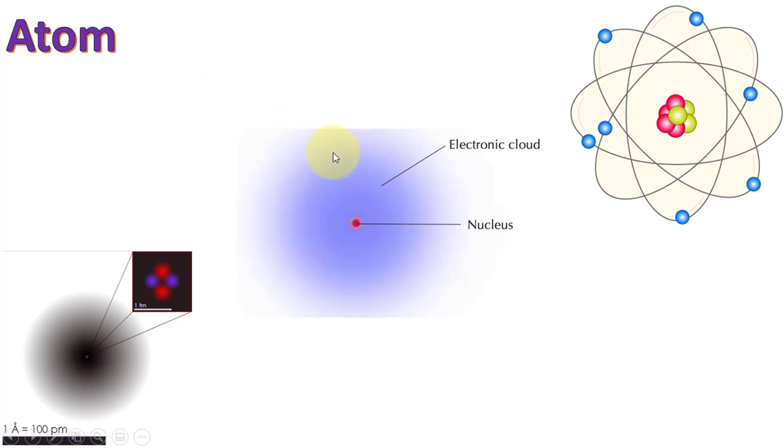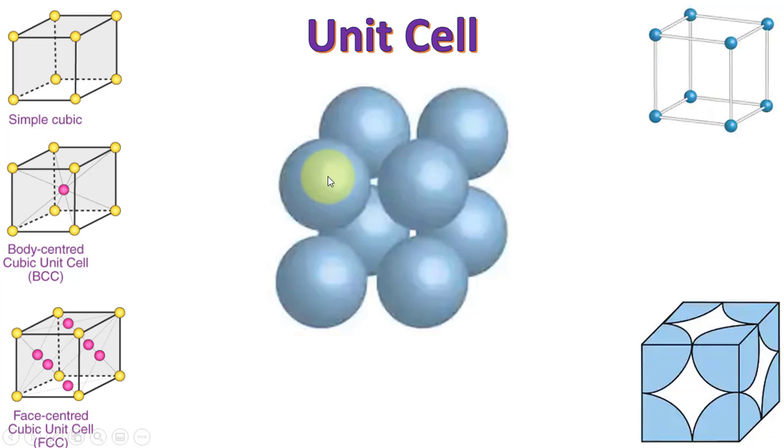We know that in an atom, a positive core called the nucleus is at the center and the electrons are orbiting around like a cloud. When these atoms are placed at specific distances called the lattice constant, it forms a unit cell.